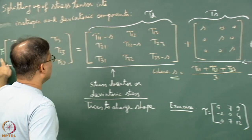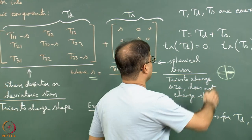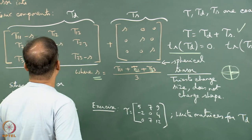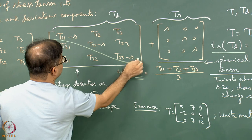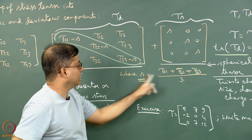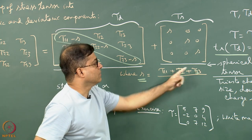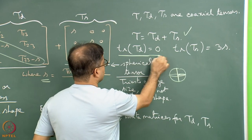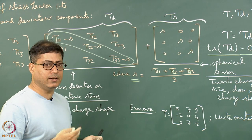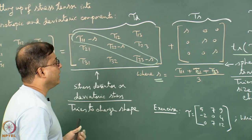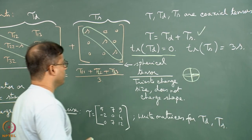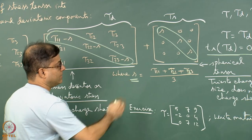We can see clearly that tau equals tau_D plus tau_S. Out of curiosity, if I find the trace of tau_D — summing the diagonal elements tau11 + tau22 + tau33 minus 3S — since S equals (tau11+tau22+tau33)/3, multiplying by 3 gives back tau11+tau22+tau33, so the trace of tau_D becomes zero. The trace of the spherical tensor, adding S+S+S, becomes 3S. These are the key properties.